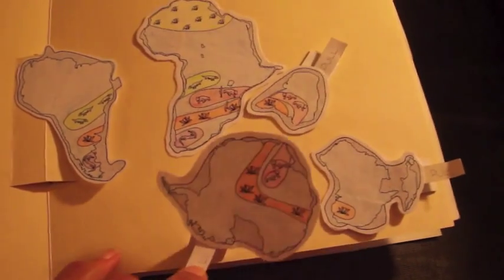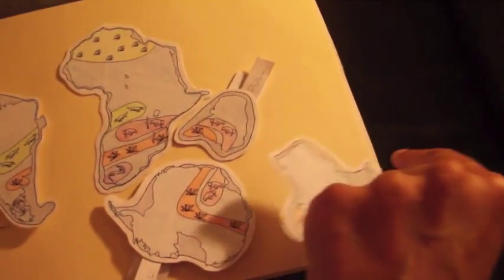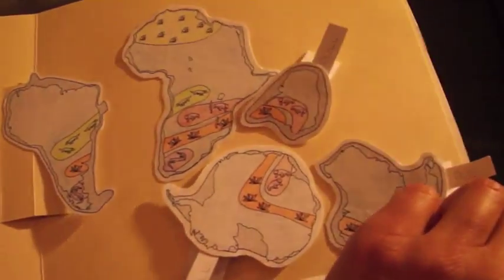and then these all come out. So Antarctica moves towards the South, and then Australia and India moving away as well.